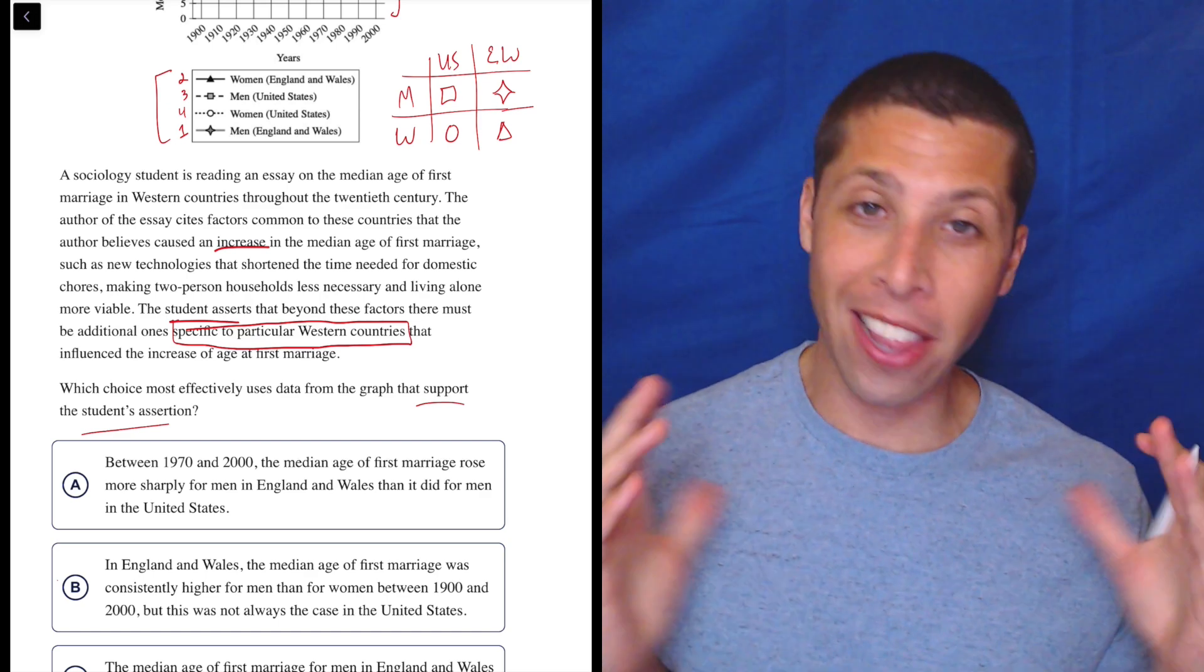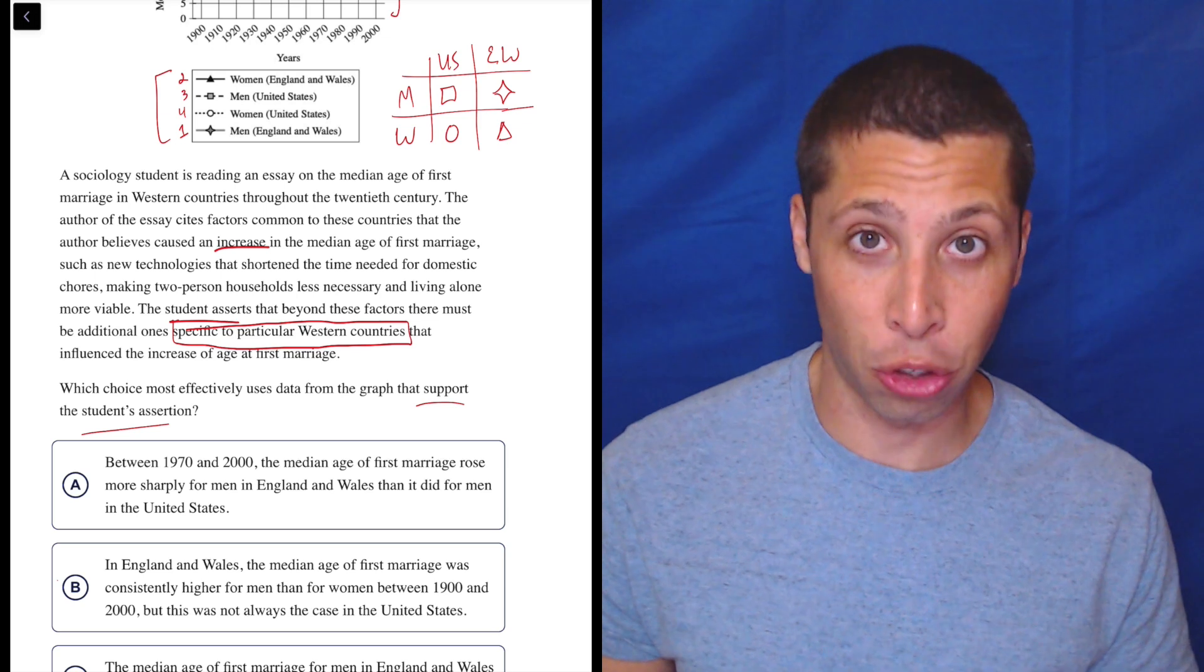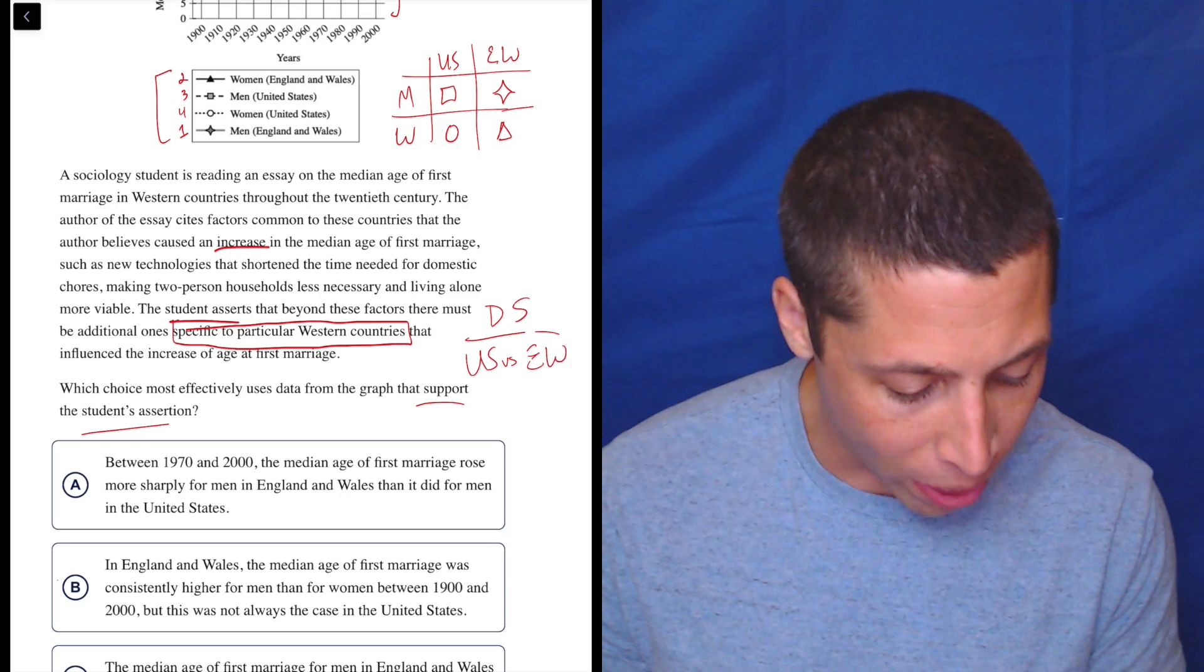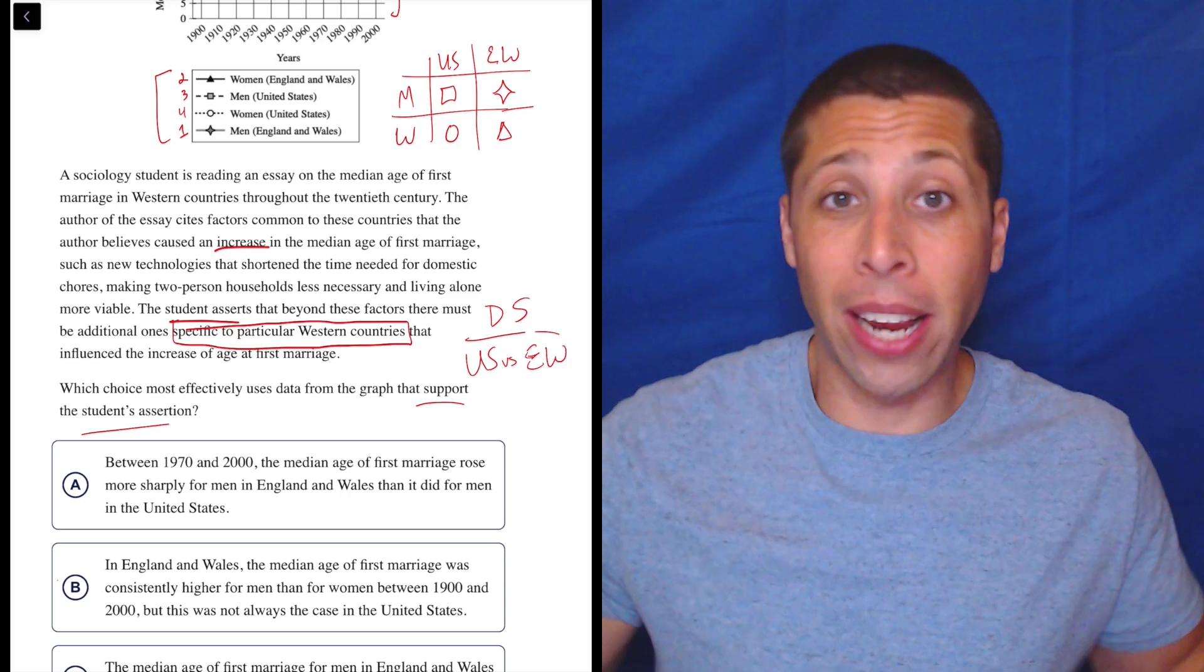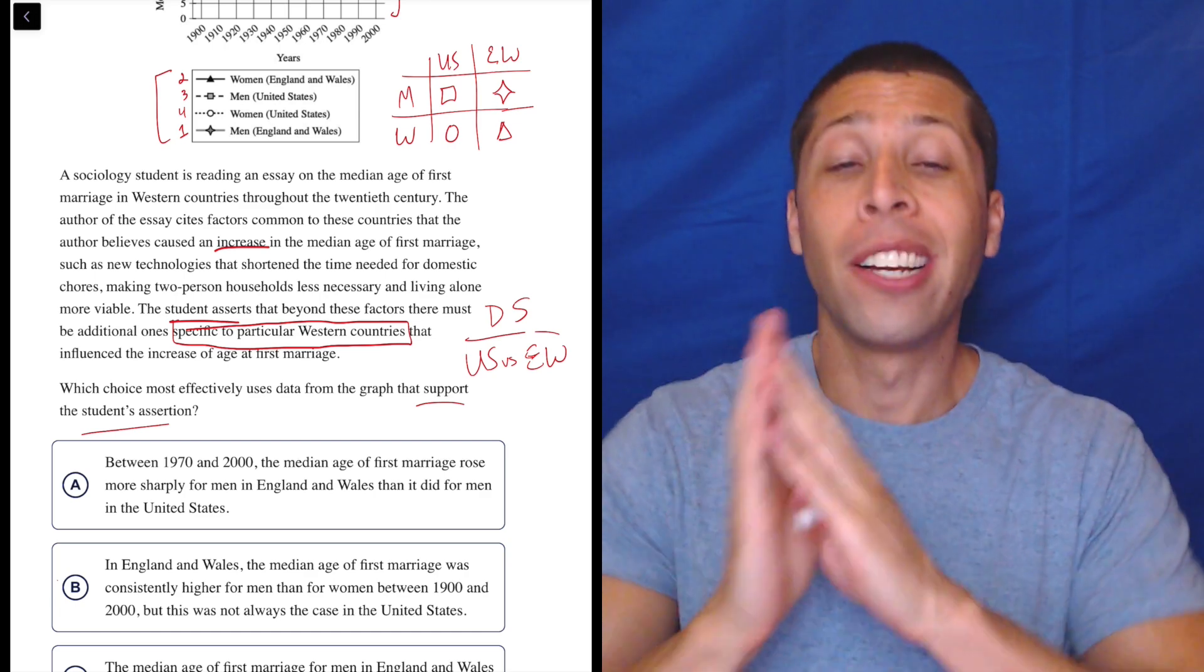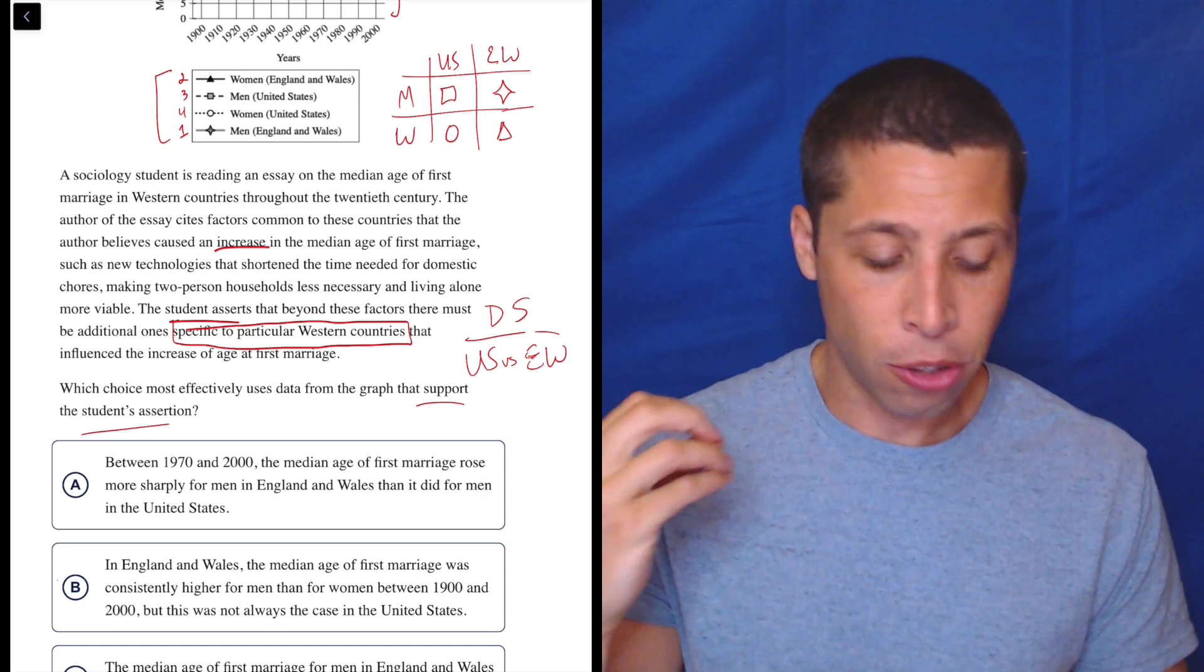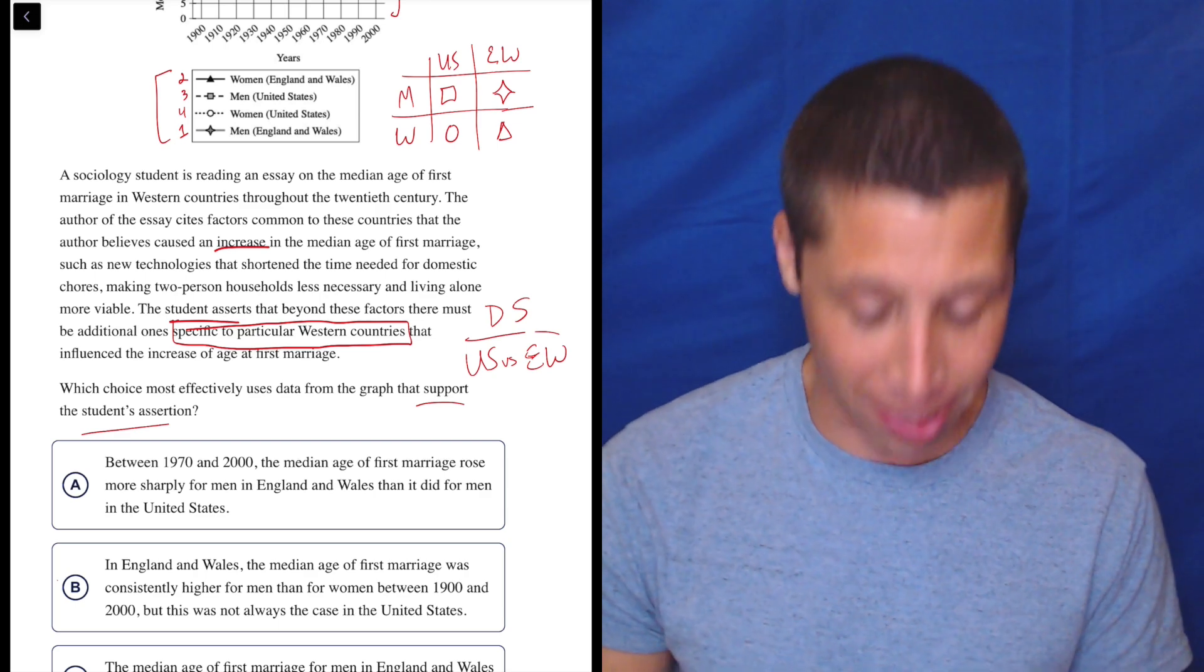To me, having taken a million SATs, that is like perfect SAT language telling me what I'm going to be looking for in these choices. Specifically, my dumb summary is that this is going to be about the US versus England and Wales. There's some difference between these things. We are trying to contrast them in some way and say that there is a difference between them. If the choice does not directly contrast the two countries, it's probably wrong, even if I don't bother to check whether or not it's accurate on the graph. So I feel like we've got a lot of preliminary information to work with. Let's go to the choices and start to make sense of this thing.